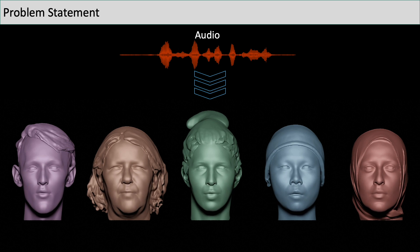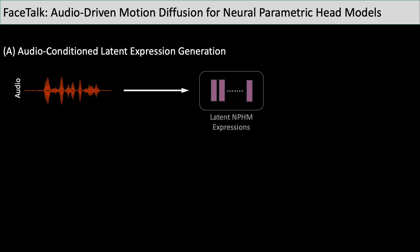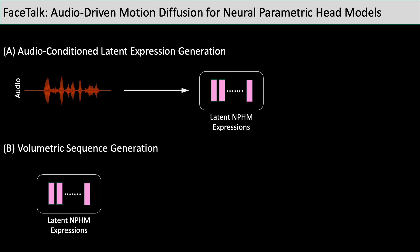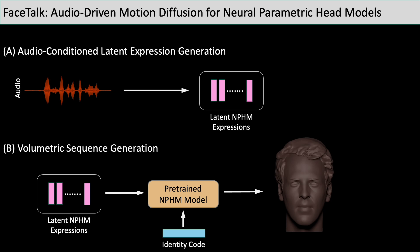We develop a latent diffusion approach for audio-conditioned volumetric avatar synthesis using the disentangled latent space of neural parametric head models. Given an audio signal, we first generate expression codes in the latent space of neural parametric head models. We then use these synthesized expressions, along with the identity space of neural parametric head models, to generate expressive and high-fidelity volumetric head animation.